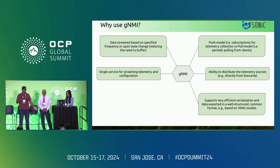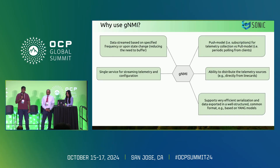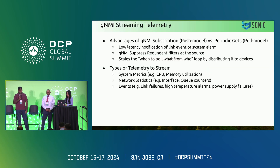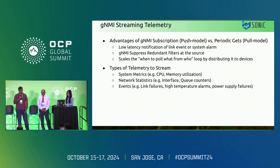It uses a very structured data format based on yang models, as well as very efficient serialization based on protocol buffers or notification buffers. It's built on the standard RPC framework, which has many language bindings. The advantages of GNMI streaming: one is push model versus the pull model, which allows us to have very low latency when there is an event in the system, whether it is a link event or an alarm.